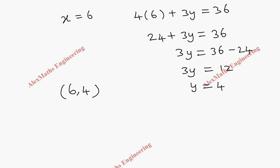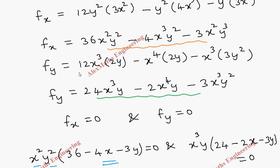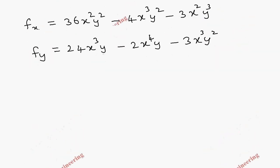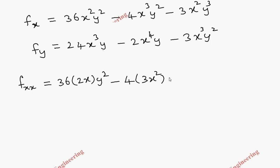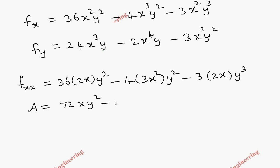Now we need to find fxx, fxy, and fyy. For fxx, we differentiate fx = 36x²y² - 4x³y² - 3x²y³ with respect to x: 36y² · 2x - 4y² · 3x² - 3y³ · 2x. Rearranging, fxx = 72xy² - 12x²y² - 6xy³. This is our value a.